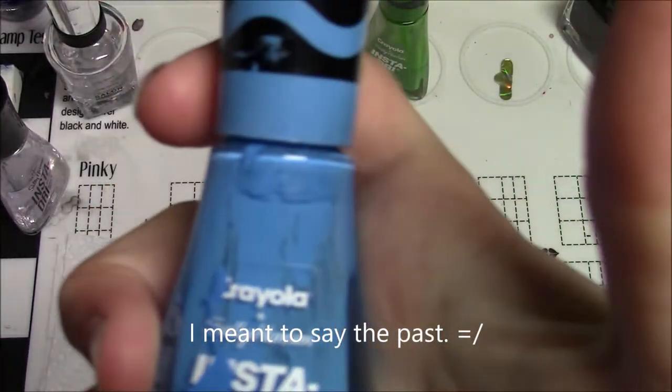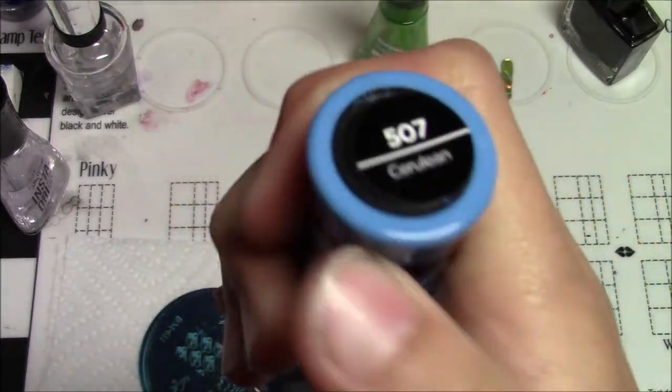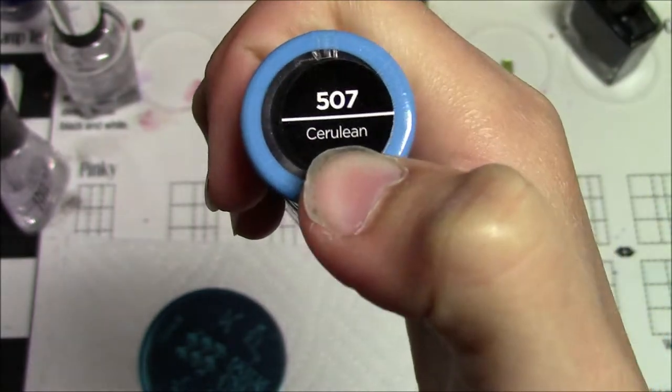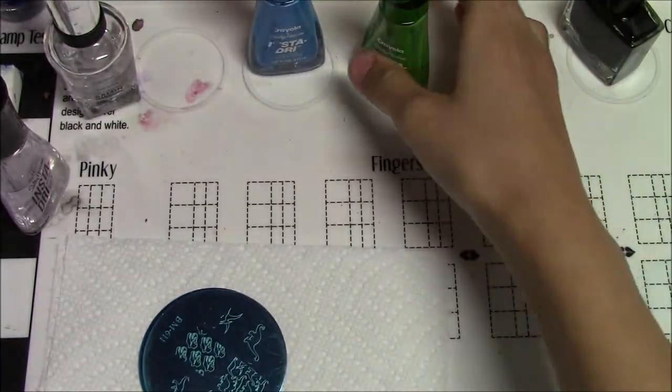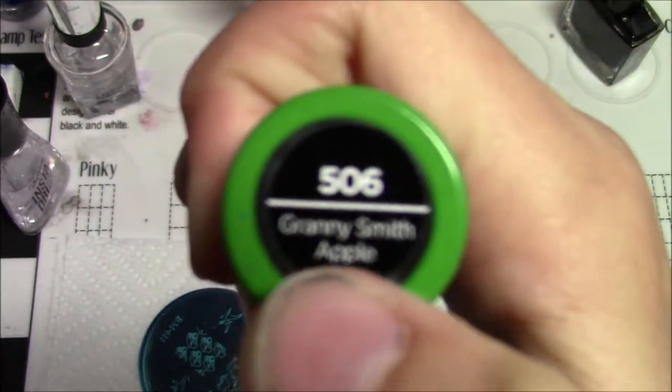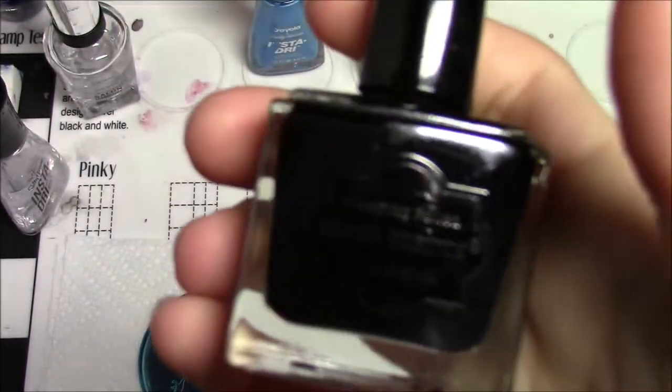What you'll need is a blue—this one is Revlon—a green, a regular green Granny Smith Apple, and a black stamping polish.